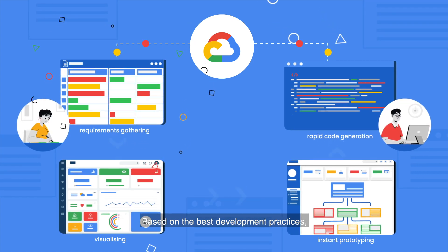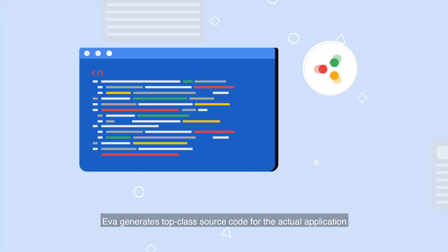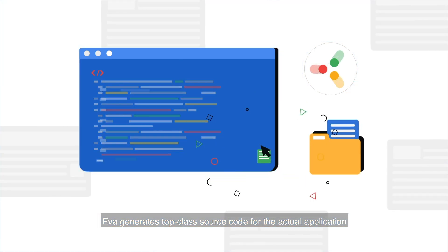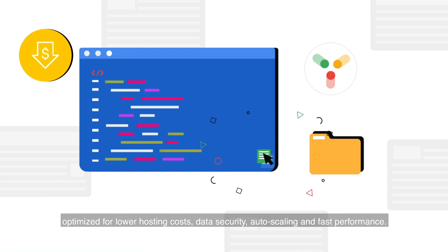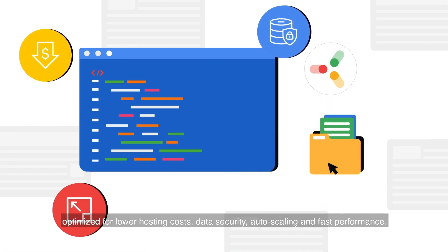Based on the best development practices, EVA generates top-class source code for the actual application, optimized for lower hosting costs, data security, auto-scaling, and fast performance.